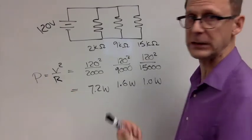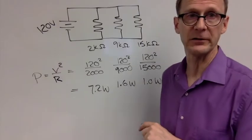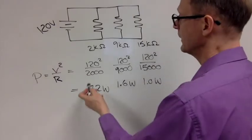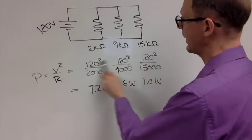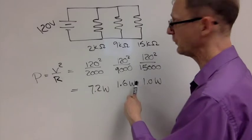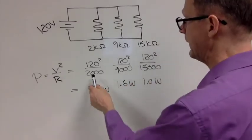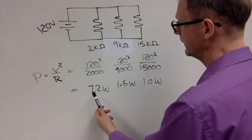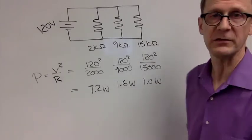And our equation for power, you have P equals IV, I squared R, or V squared over R. And that's the version I'm going to use here. So 120 volts squared on top for all three resistors, but on the bottom we're going to divide by 2,000 ohms, 9,000 ohms, and 15,000 ohms. When you punch that into a calculator, you end up with 7.2 watts, 1.6 watts, and 1.0 watts.